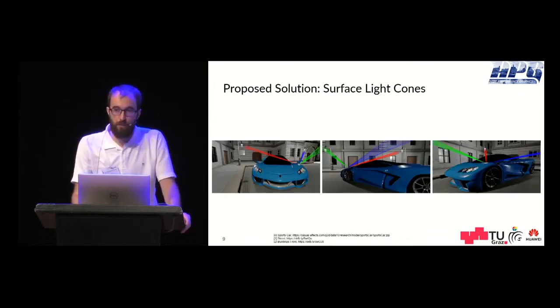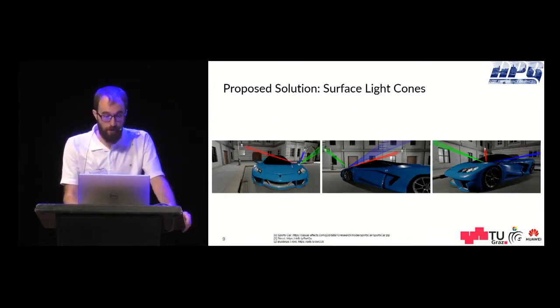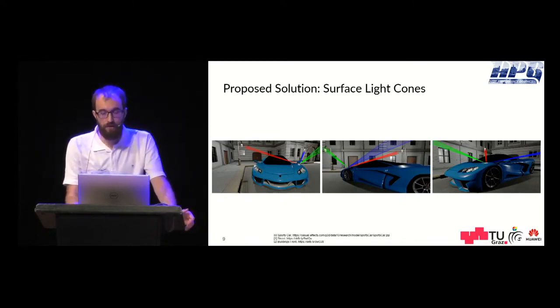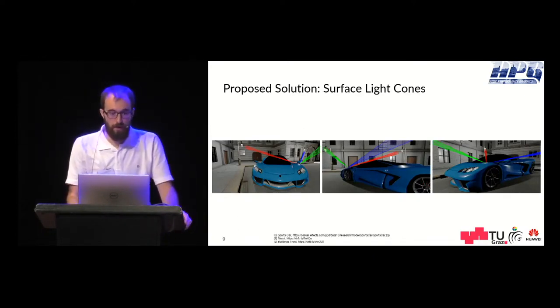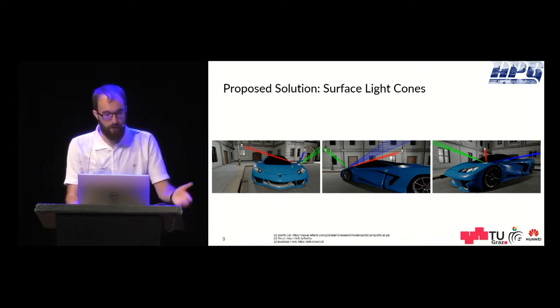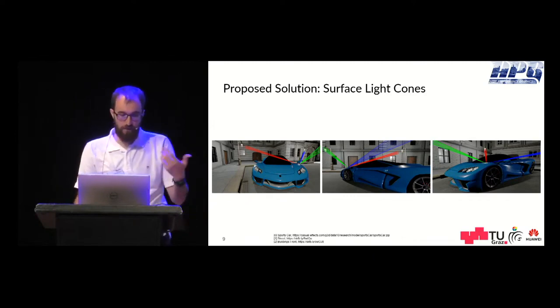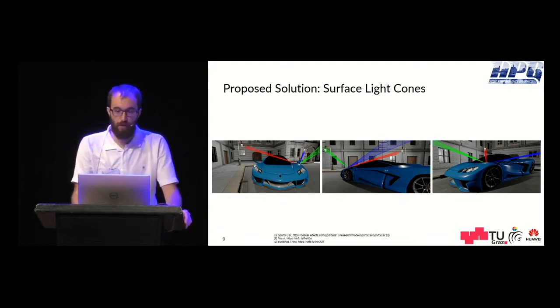For this we propose to use surface light cones which represent all incoming radiance on a certain surface point from all light sources. As you see here in the picture where the radiance from the street light is represented by those three cones.